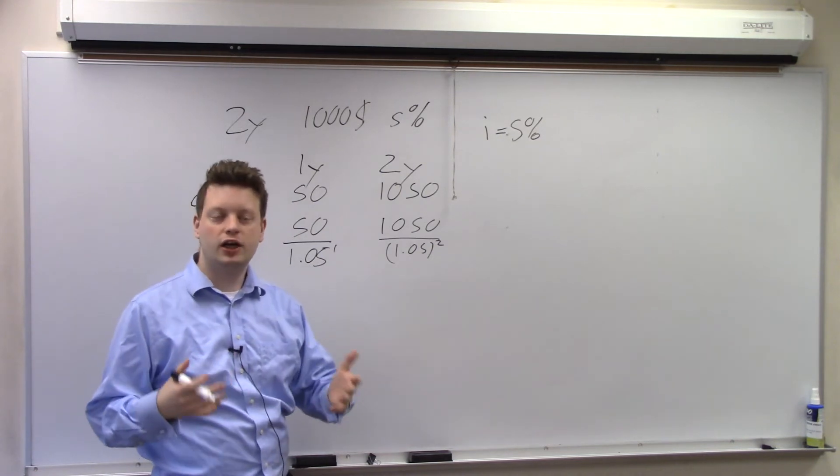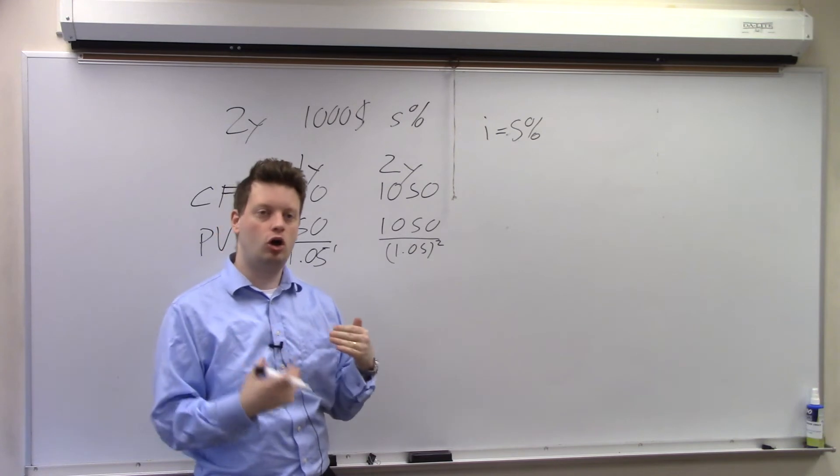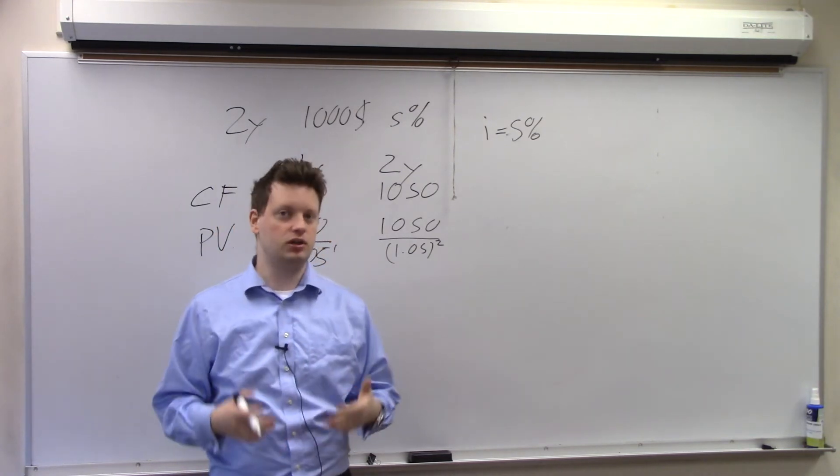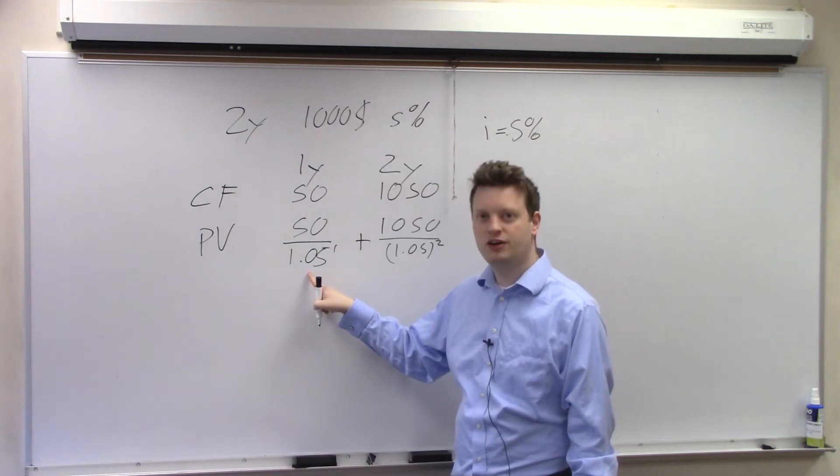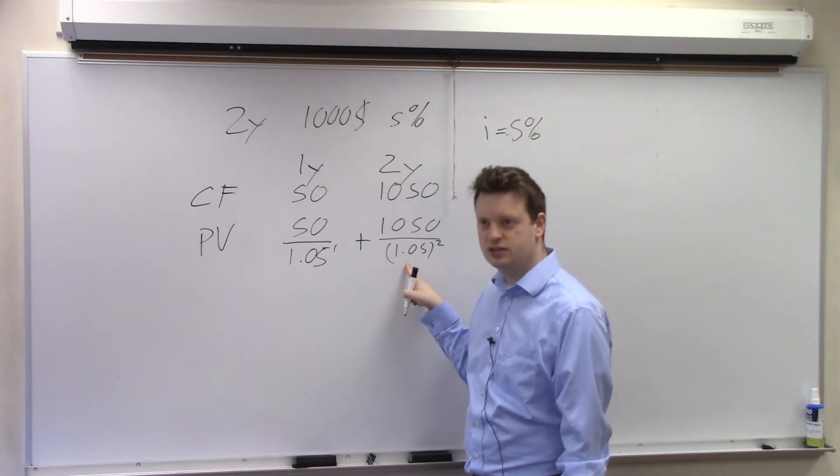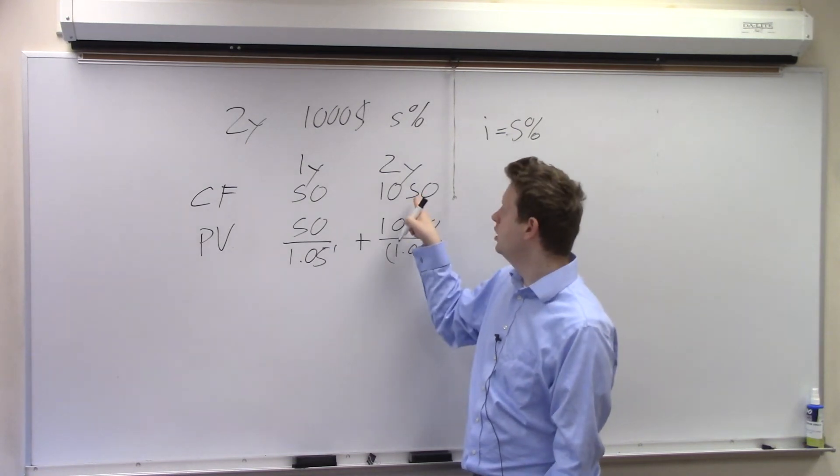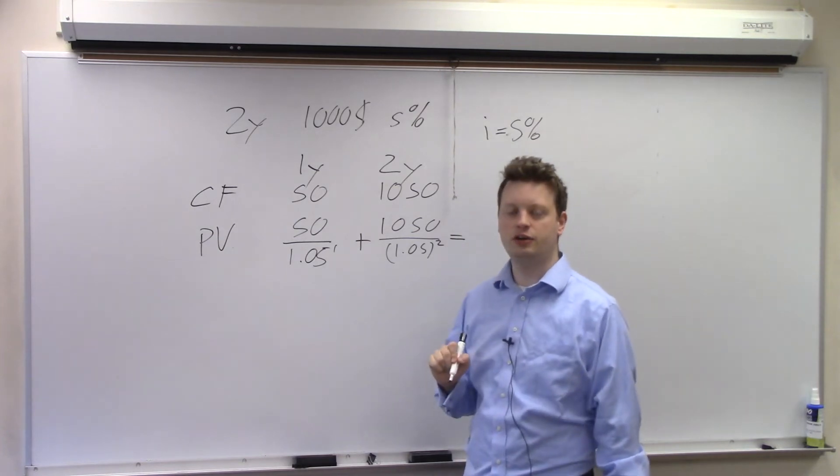Now how do I get the price of the bond from this? Well I simply add up all these present values and that will give me the price of the bond. So I add the present value of the first coupon payment to the present value of the next coupon payment together with the principal and I get the value of this bond.